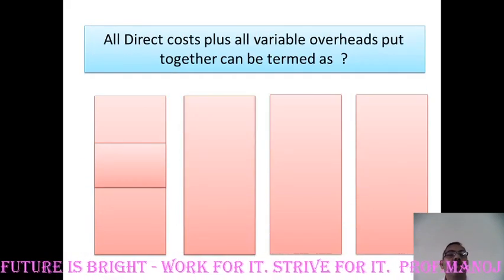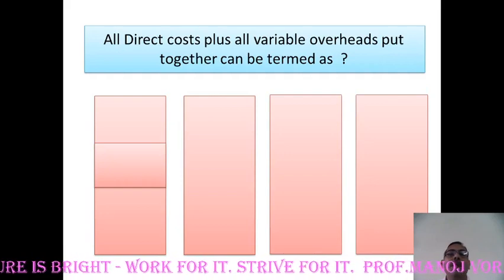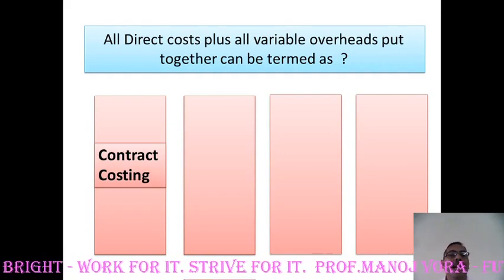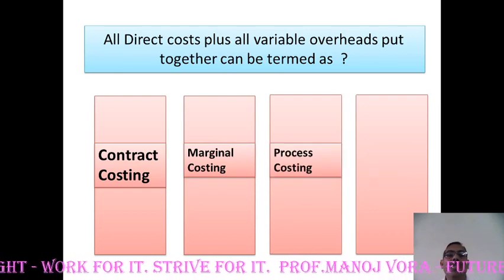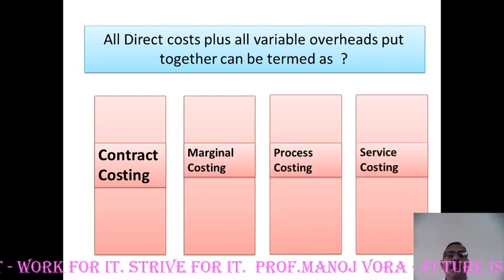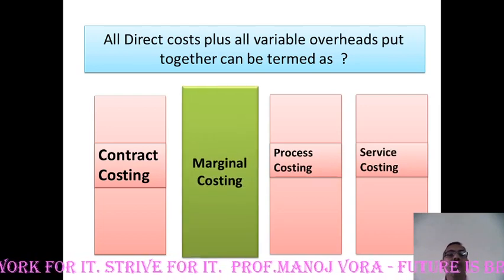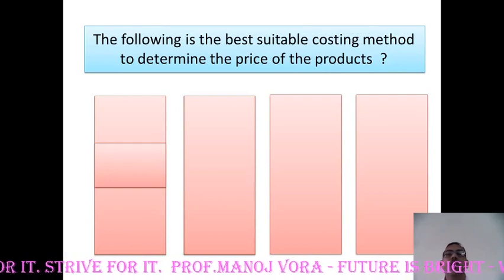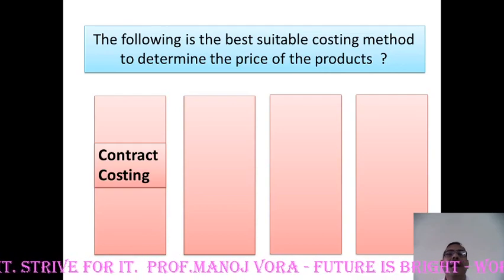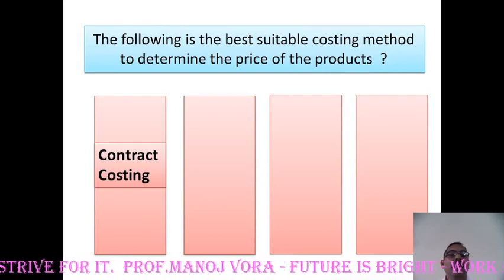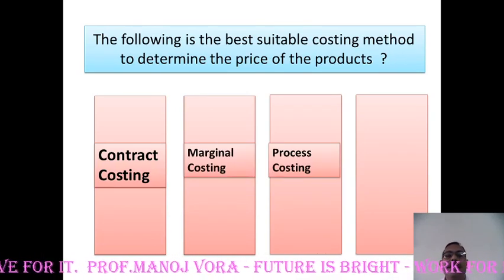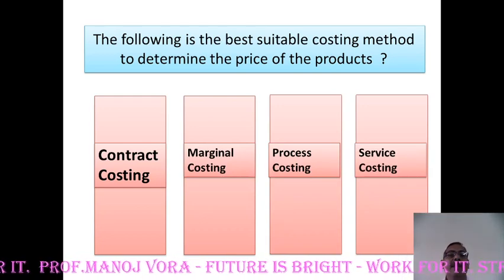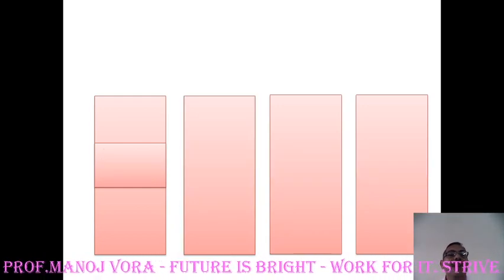Your next question: all direct costs plus all variable overheads put together can be termed as contract costing, marginal costing, process costing, or service costing. The following is the best suitable costing method to determine the price of the products — is it contract costing, marginal costing, process costing, or service costing? Your right answer is marginal costing.